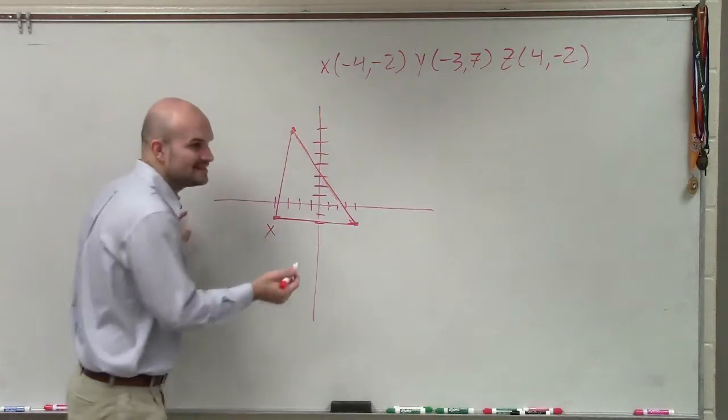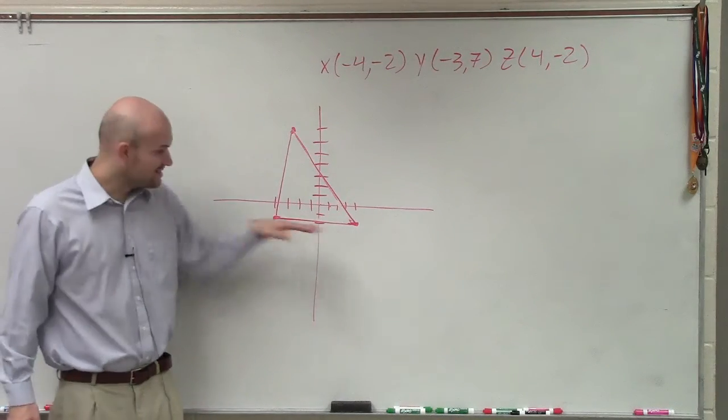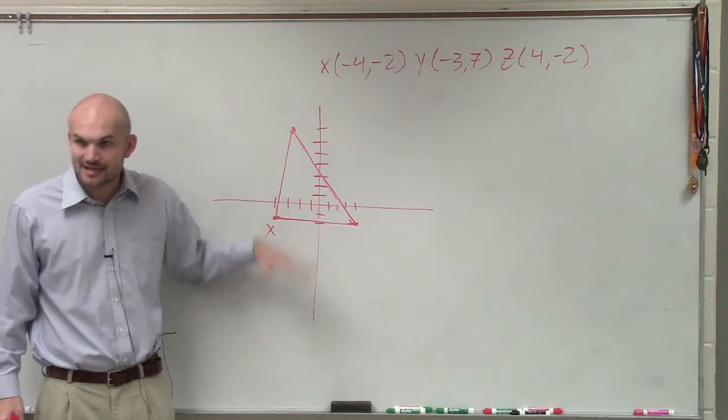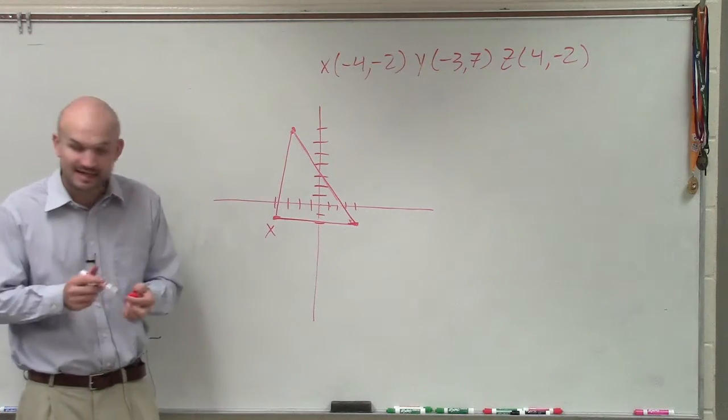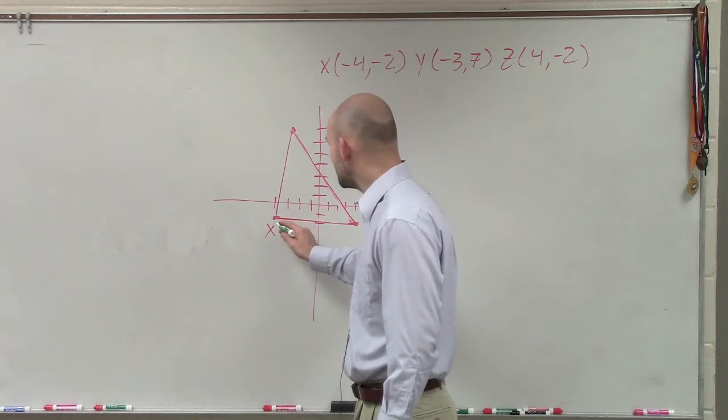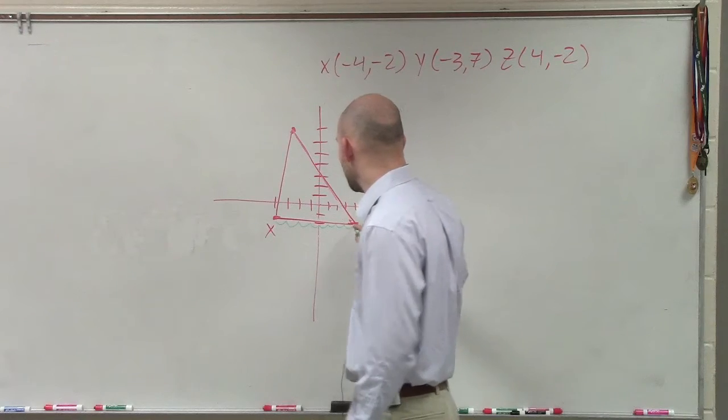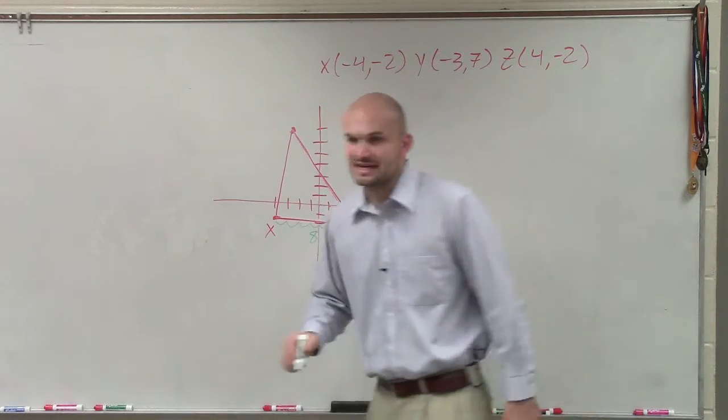So how are we going to determine the length? Well, this one, you guys can see this is a horizontal line, right? It's not changing up or down. So this one's fairly easy. What we can do for this one, Mario, is just count the number of units. So this one is 1, 2, 3, 4, 5, 6, 7, 8. So that one has a length of 8.